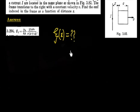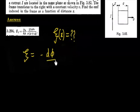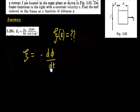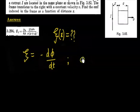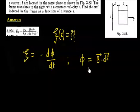So how will we solve this? We know that ξ equals minus dΦ/dt. So if somehow we can calculate Φ and then differentiate, things are easy. Our target is to calculate Φ, and Φ is nothing but the integral of B·dS. If we can calculate B·dS, we can calculate everything.